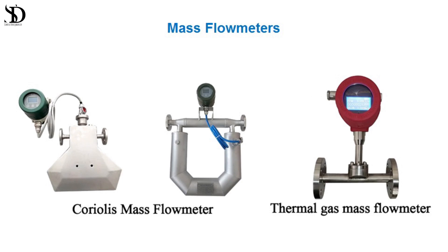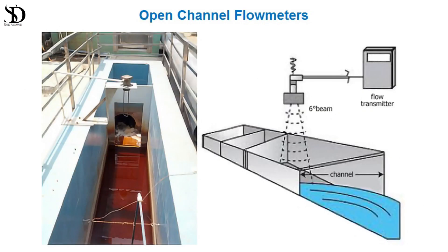4. Mass flow meters: measure the mass of the fluid passing through the meter. Coriolis and thermal flow meters belong to this category. 5. Open channel flow meters: primarily used for measuring flow rates in open channels such as rivers and streams. Weirs, flumes, and acoustic Doppler methods are employed.